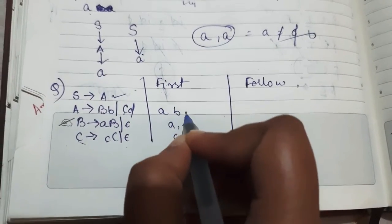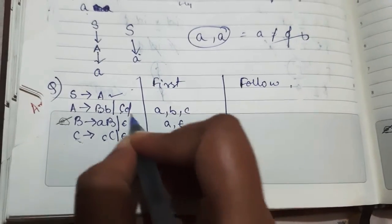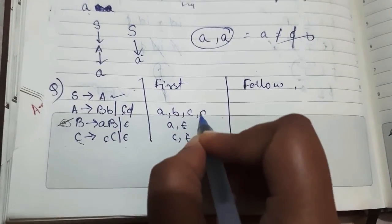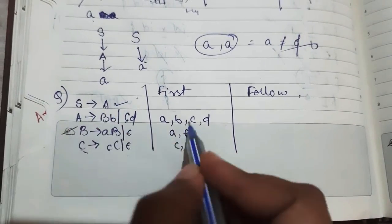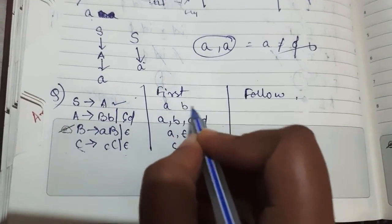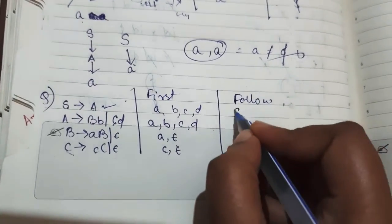Else from C I can write C, and if I put epsilon then it's D. And then for S it depends on A, that is A B C D. Now finding the follow.